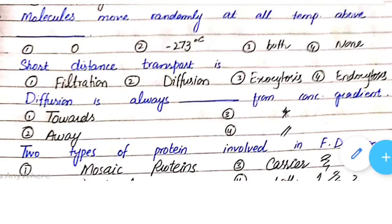Molecules move randomly at all temperatures above: option one - zero degrees centigrade, option two - minus two seventy three degrees centigrade, option three - both A and B, option four - none of them. Basically, molecules move randomly at all temperatures above minus two seventy three degrees centigrade, so option three is correct.